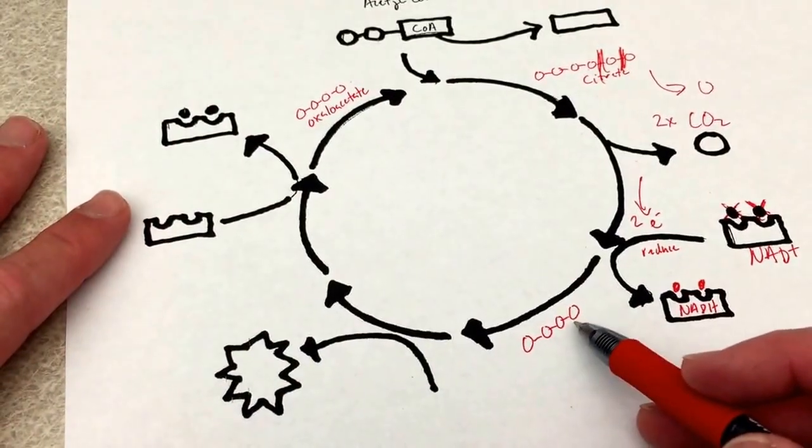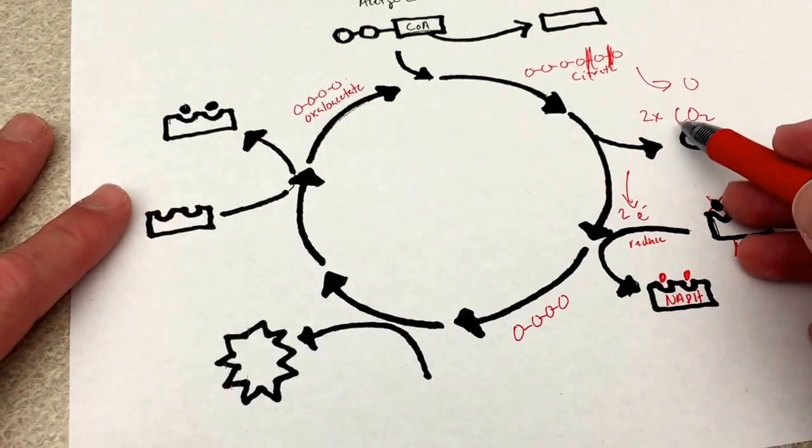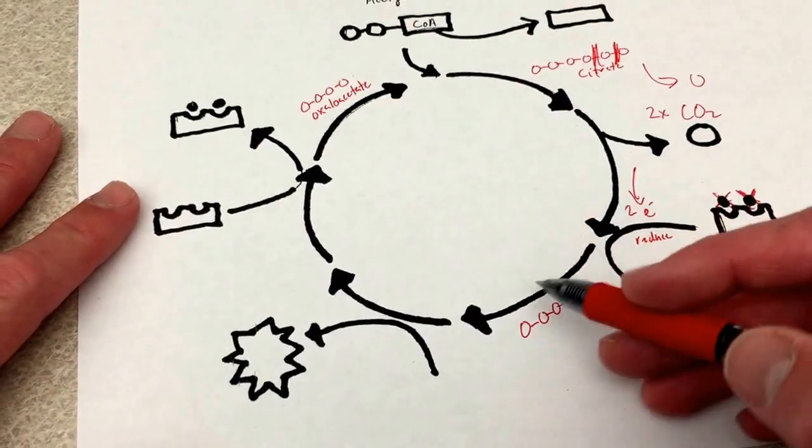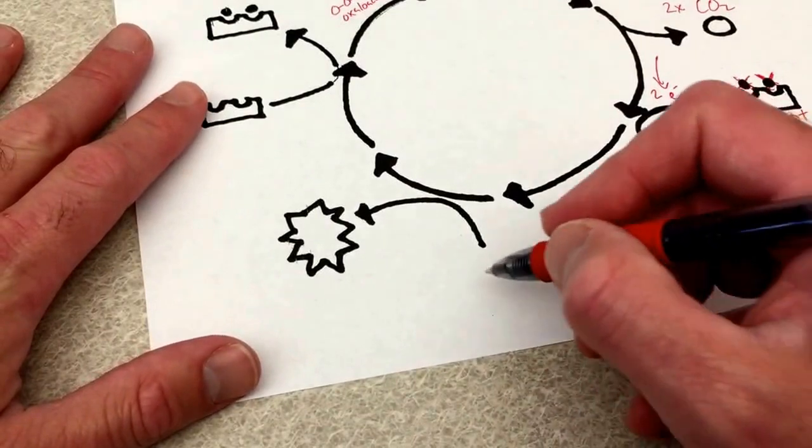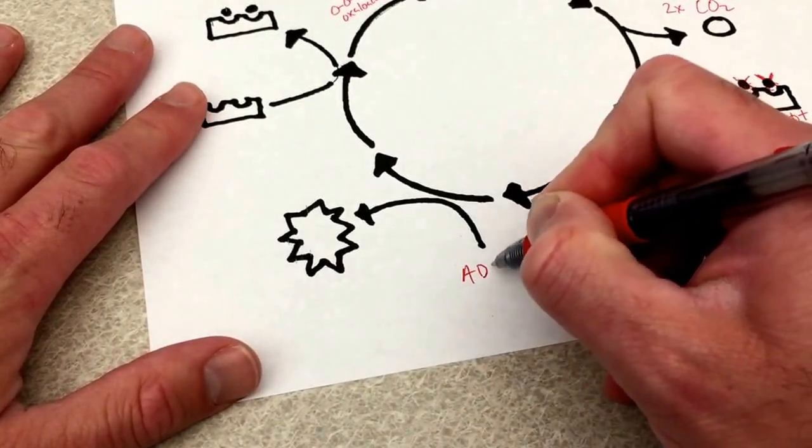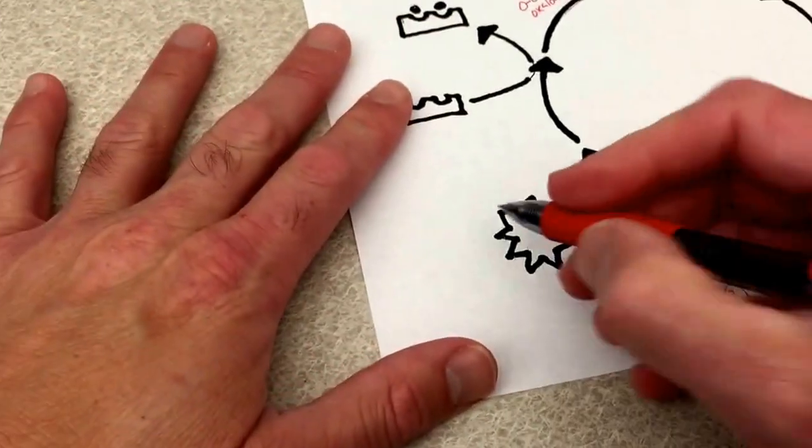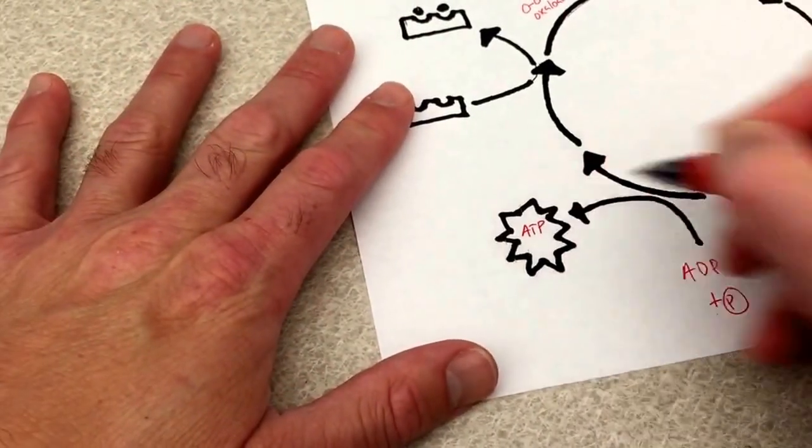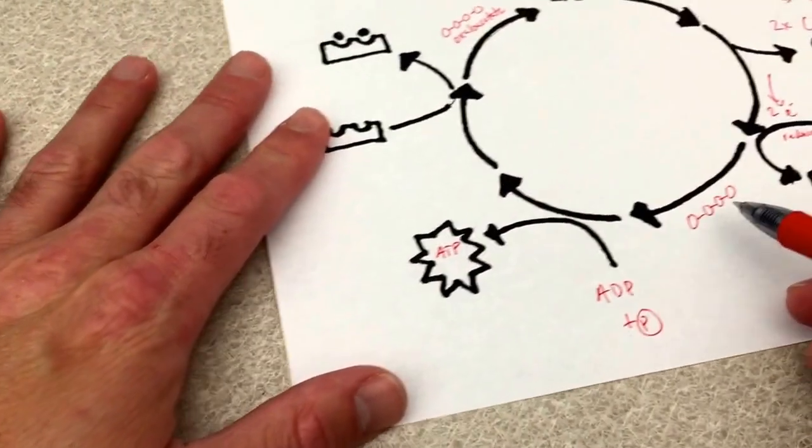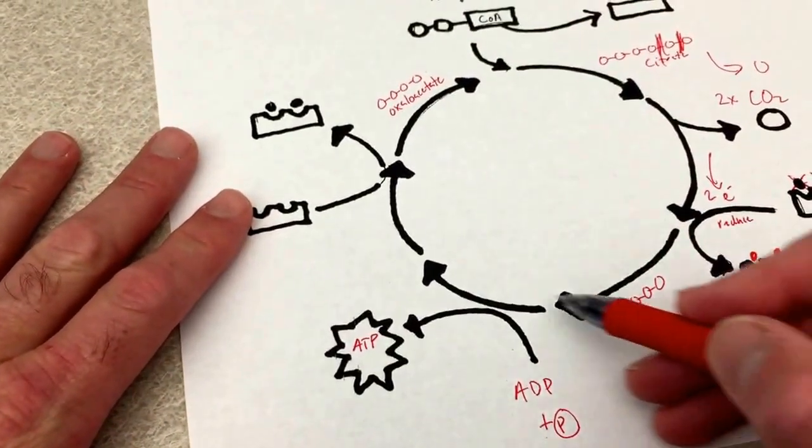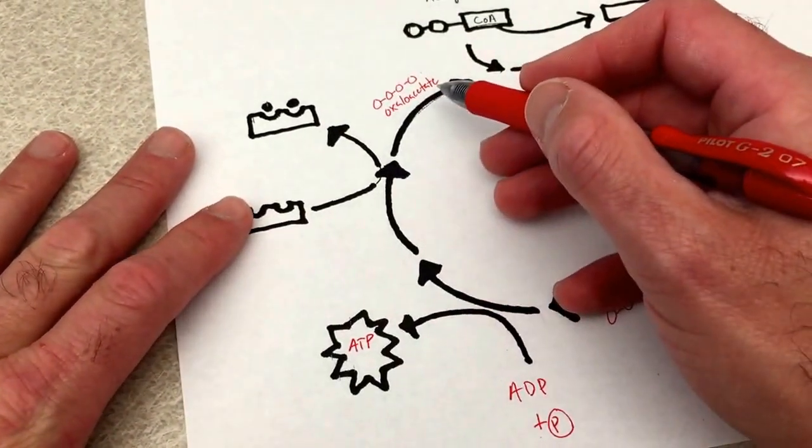Here's the four carbon molecule after we've lopped off those two CO2s, and another bottom line of this process is that we get a little bit of ATP when we modify this four carbon molecule and turn it into oxaloacetate.